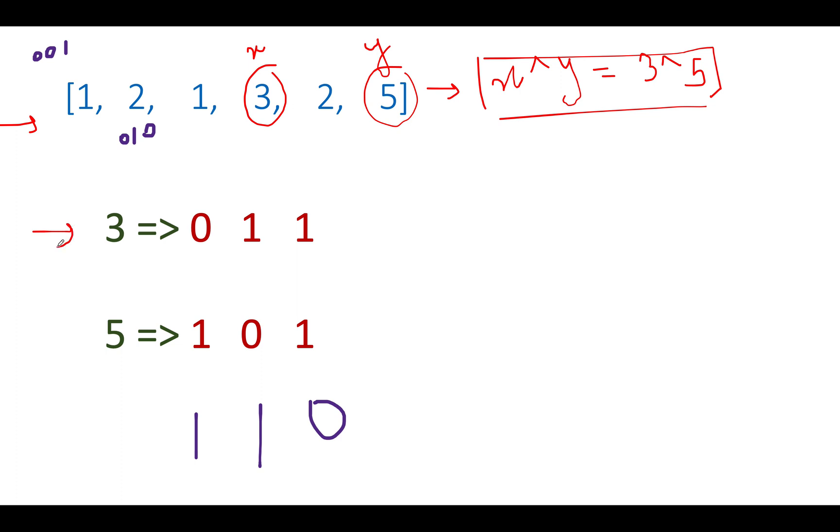Let's see the binary representation of three. Binary representation of three is 0, 1, 1. The binary representation of five is 1, 0, 1. When I XOR these two elements together, what do I get? I get 1, 1, 0.